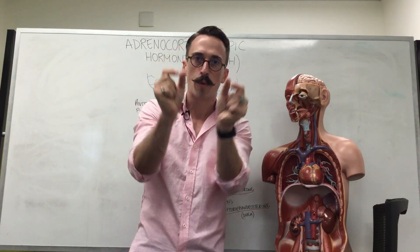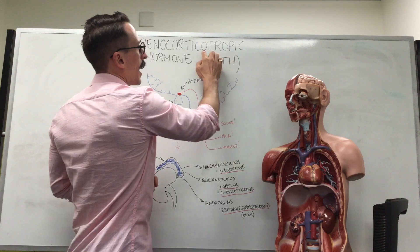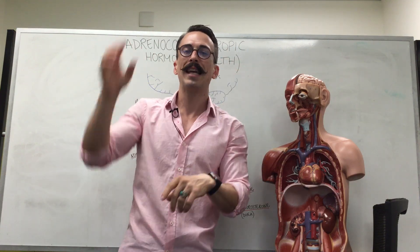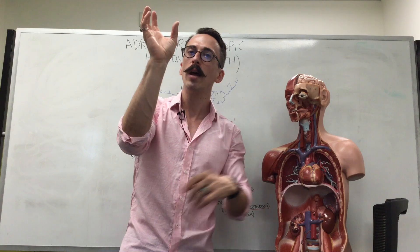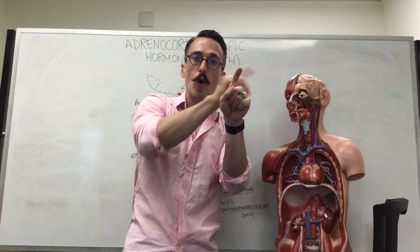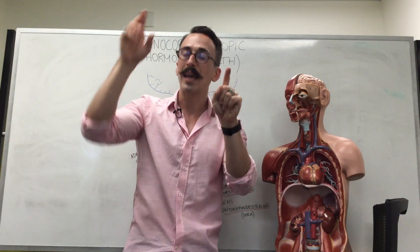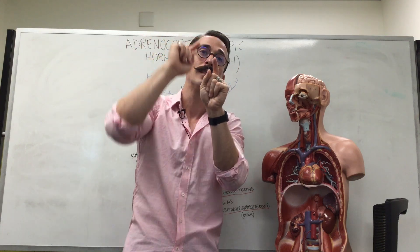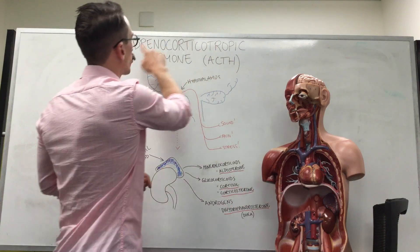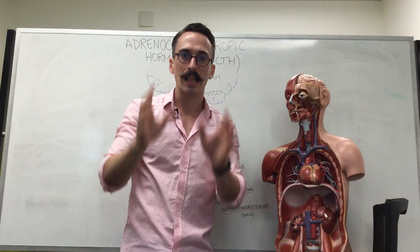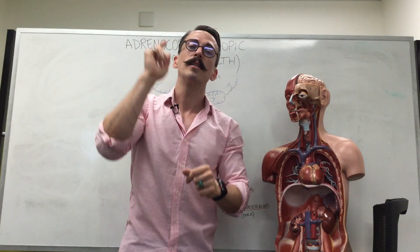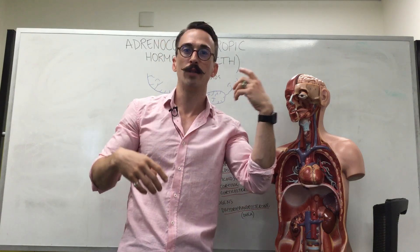More specifically, 'cortico' tells you it stimulates the cortex of the adrenal glands — this is the outermost portion. And 'tropic': when you hear that term in relation to hormones, it means it is a hormone that goes to a gland and tells that gland to release another hormone or a bunch of hormones. So adrenocorticotropic hormone travels to the adrenal glands, specifically the cortex, to tell it to release a bunch of hormones.